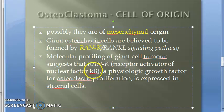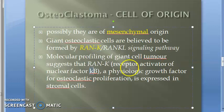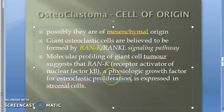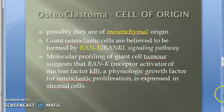The 'kB' in RANK is actually a special character — a Greek letter rather than a plain 'K'. Essentially, RANK is a physiologic growth factor for osteoclastic proliferation, and it is expressed in the stromal cells. This is why giant osteoclastic cells form — because of the RANK signaling pathway.